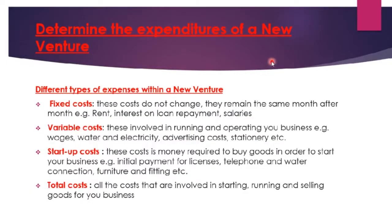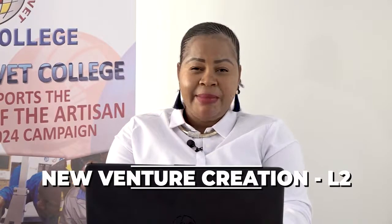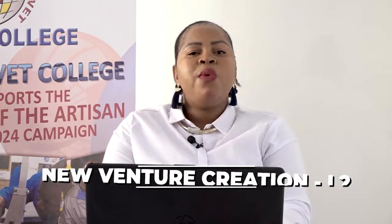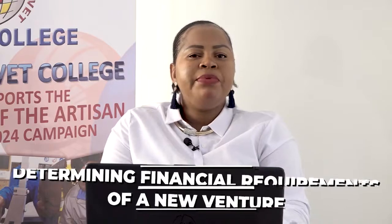Number two, variable costs. These costs involve the running and operating of your business. Under variable costs, those expenses fluctuate — we pay according to consumption. Examples include wages, water and electricity, advertising costs, and stationery. Wages are a variable cost because we pay employees for performing a certain duty; we can pay them on an hourly, daily, or weekly basis. You pay someone because they did the job that was agreed upon.